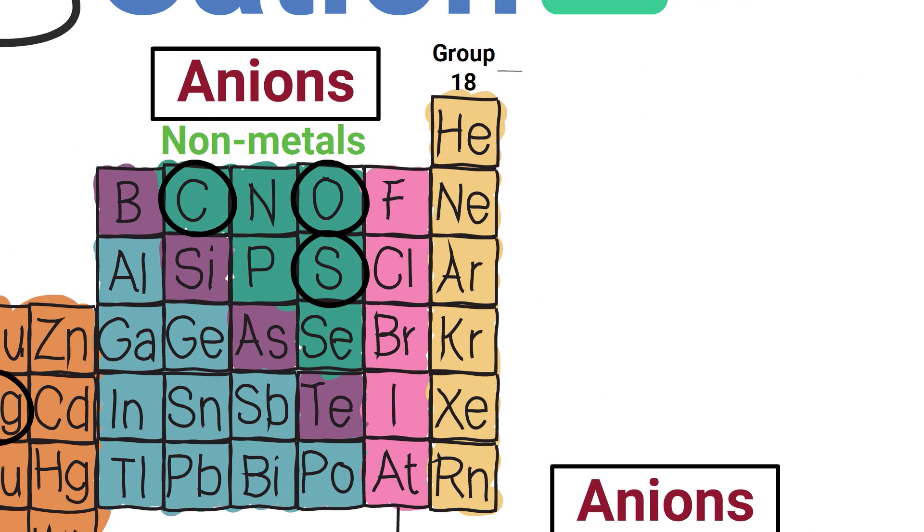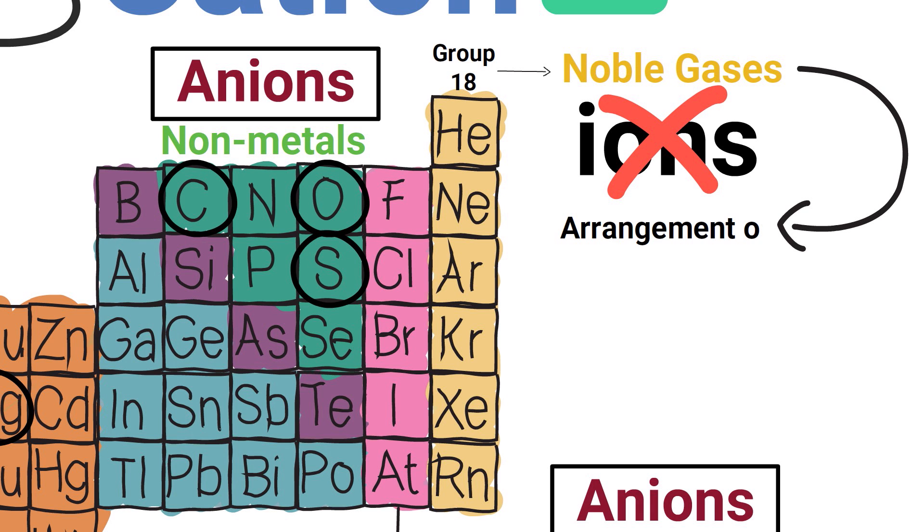The elements that are located in group 18 of the periodic table are known as noble gases. They typically do not form ions because their arrangement of electrons makes them unreactive.